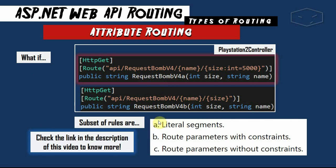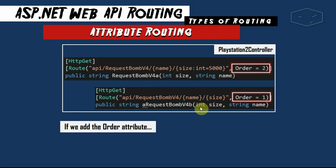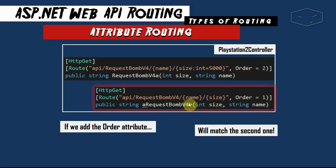If you try to reach the address abc/10, it gives a page not found because the minimum constraint is 100. Interestingly, when one route has a default value for size (5000) and the other has a constraint, it works — it matches the constrained route first. This is a subset of the rules Web API applies to find the right action method. It first checks literal segments, then route parameters with constraints, then route parameters without constraints.